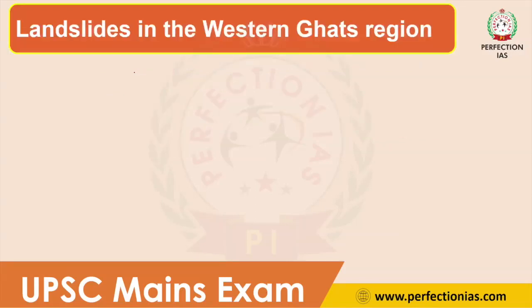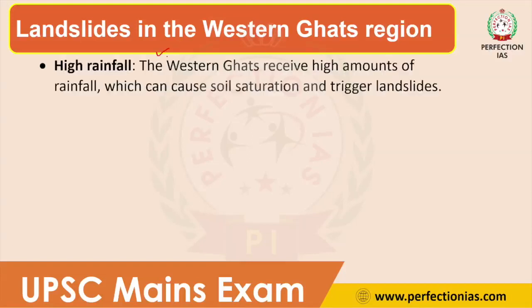Now we will discuss the reasons for occurrence of landslides in the Western Ghats. The first reason is rainfall. During the southwest monsoon, the windward side of the Western Ghats receives heavy downpour — regions like the central part of Karnataka and Kerala receive very high amounts of rainfall, which causes soil saturation and triggers landslides, similar to the Himalayan region.